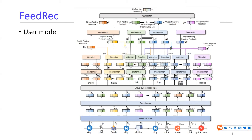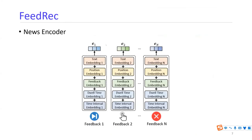Finally, the four kinds of user feedback — strong positive, weak positive, weak negative, and strong negative — are used for model training. The news encoder incorporates the text information of news, as well as the position of the behavior in the sequence, the behavior type embedding, the dwell-time embedding, and the time interval embedding. All kinds of embeddings are added together as the unified news embedding.